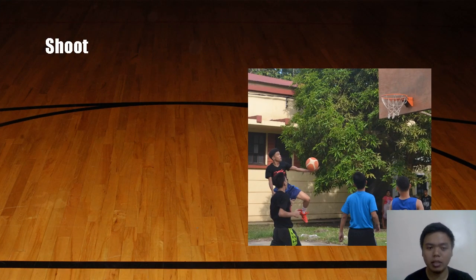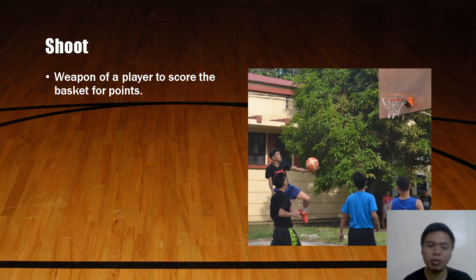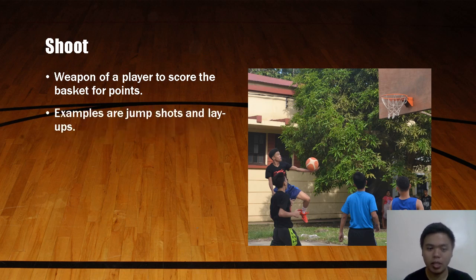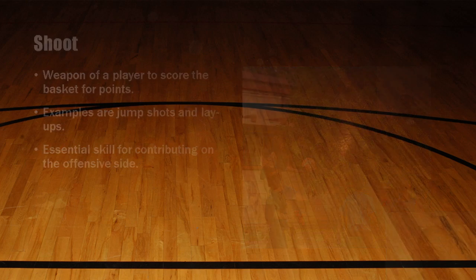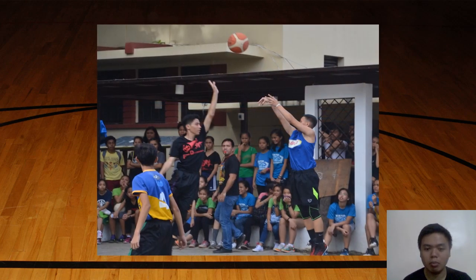Next is Shoot. Shooting is a weapon of a player to score points for the basket. Examples include jump shots and layups. It is an essential skill for contributing on the offensive side. Here is an example of player A shooting the ball over a defending player.